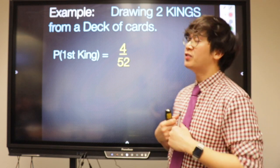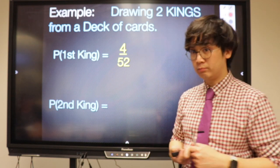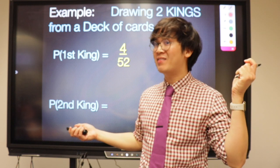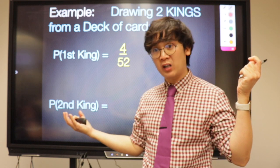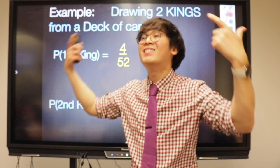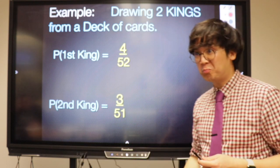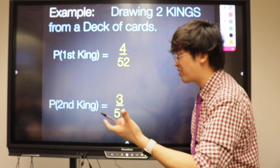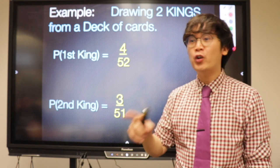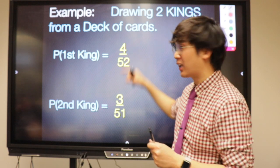The probability of getting the first king is 4 out of 52. But what about the probability of getting the second king? It's not also 4 out of 52. Assuming that you picked the first king, there are only 51 cards left and only three kings remaining.